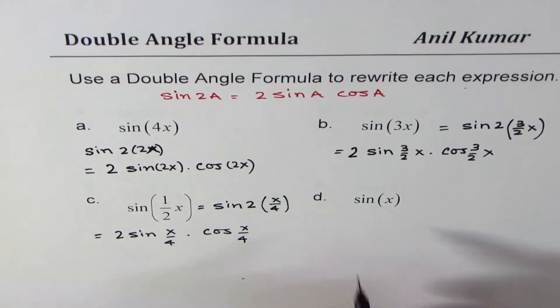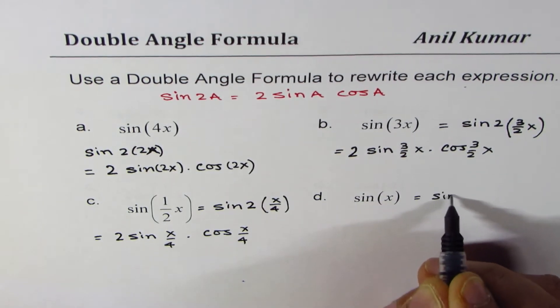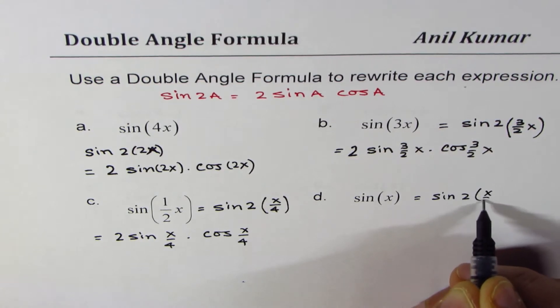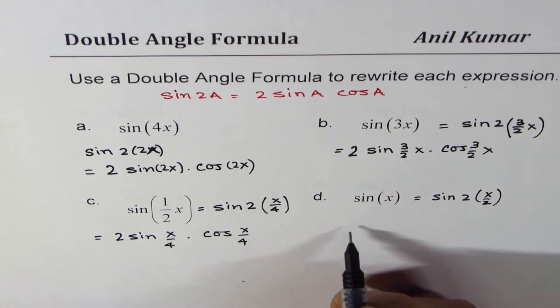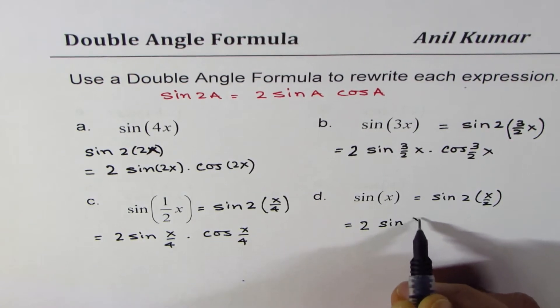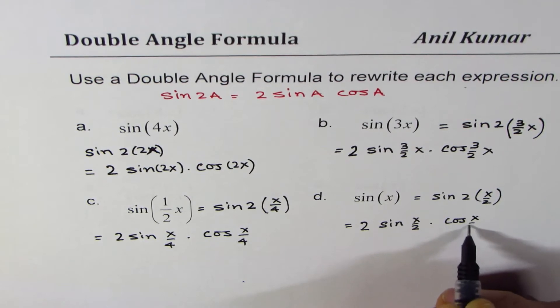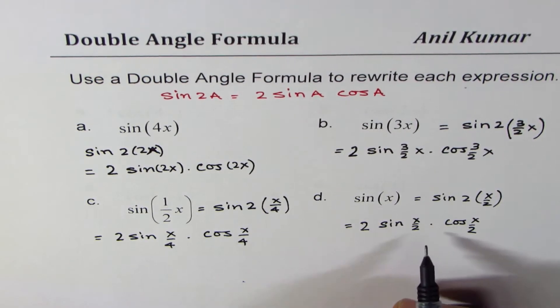here is sine x, which could be written as sine of 2 times x over 2. So I could write this as twice sine half x times cos x over 2. So like this, you have to do it.